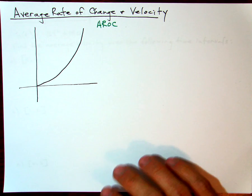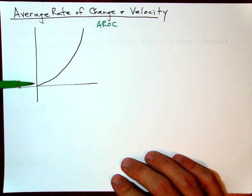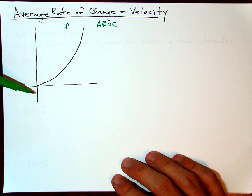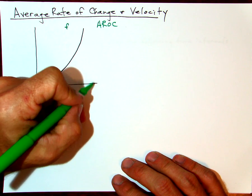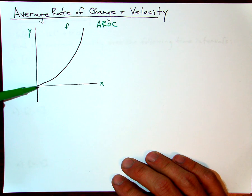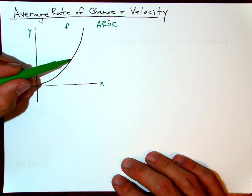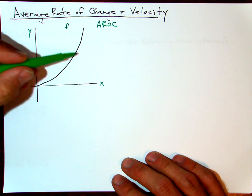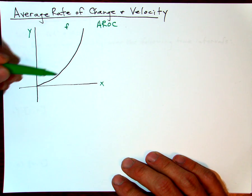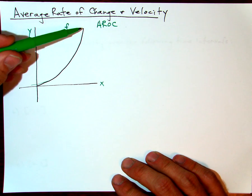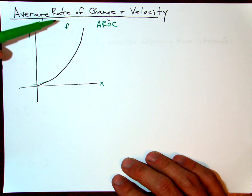So what do we mean by average rate of change? We have a function here, I'll call it f, and if we call this axis x and this y, we can see that as x changes, y changes. There's a rate of change indicated by the way y changes as x changes. I've just drawn this curve here that I'm going to call f.